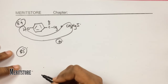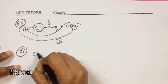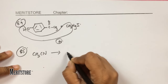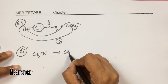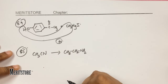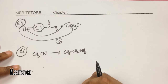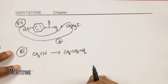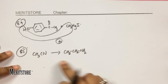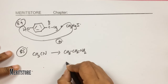Question number 85: which reagent cannot be used to convert CH₃CN (nitrile) to a primary amine? Platinum hydrogenation, lithium aluminium hydride, and sodium in ethanol can all carry out this reduction. However, SnCl₂ and HCl perform only partial reduction and will not give the complete reduction to a primary amine. Hence option D.